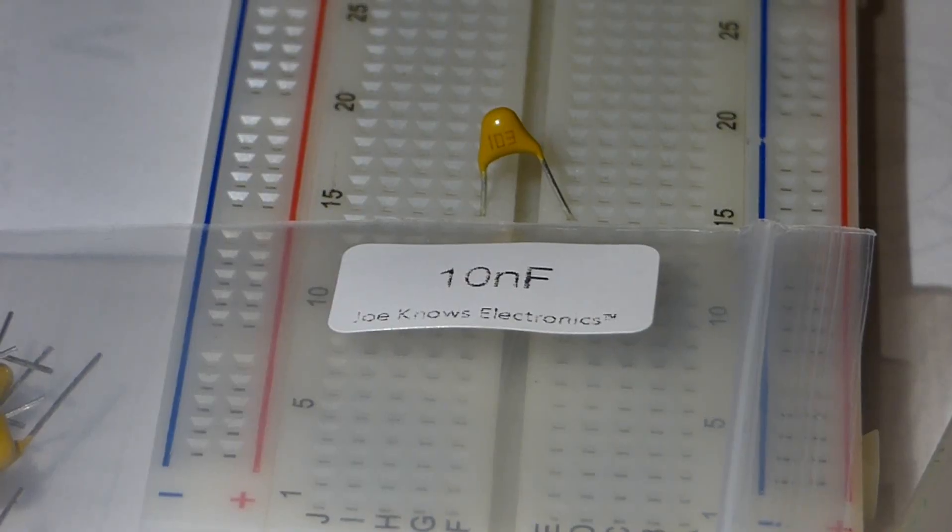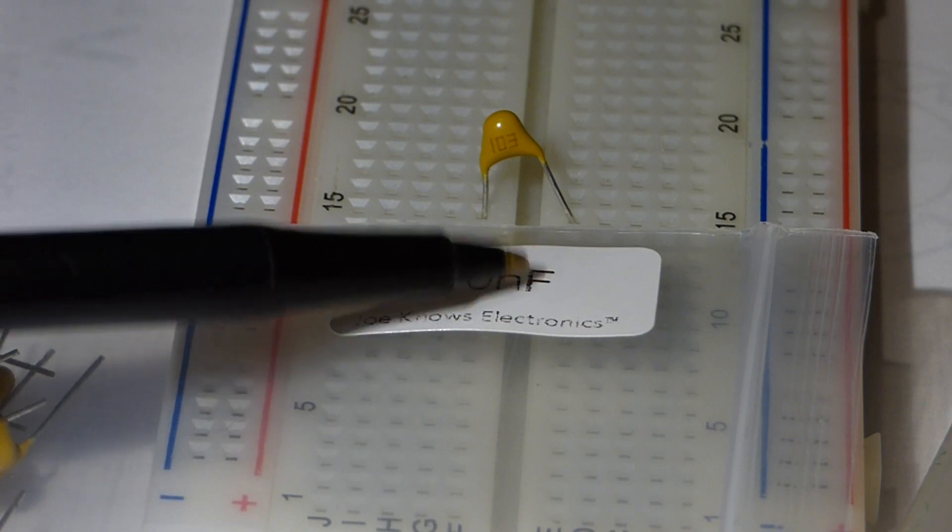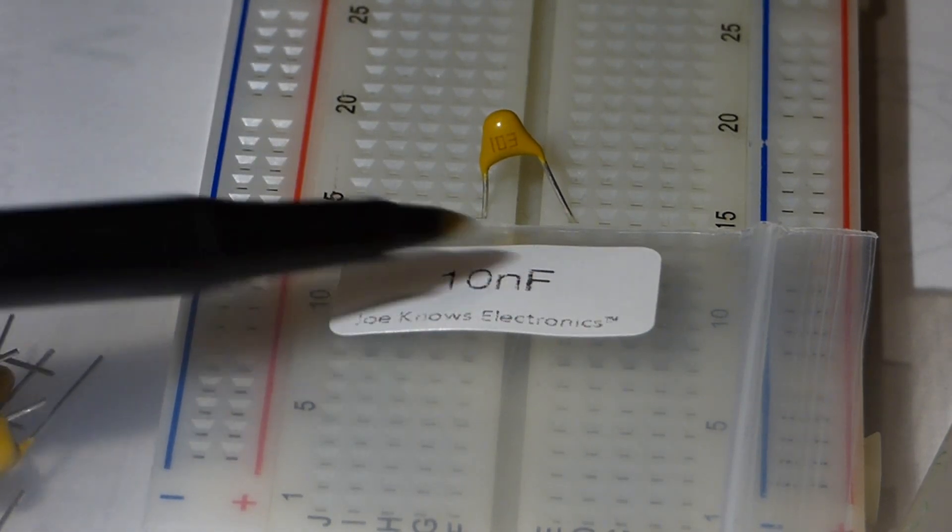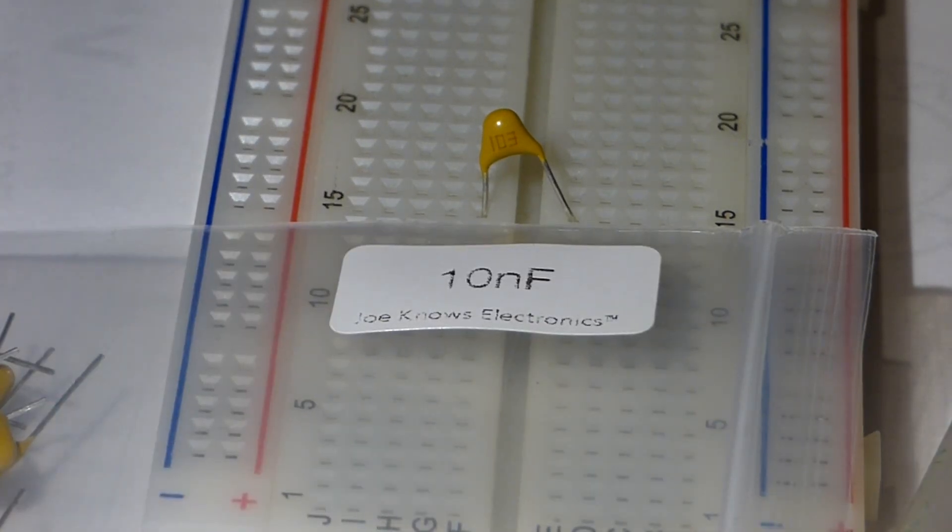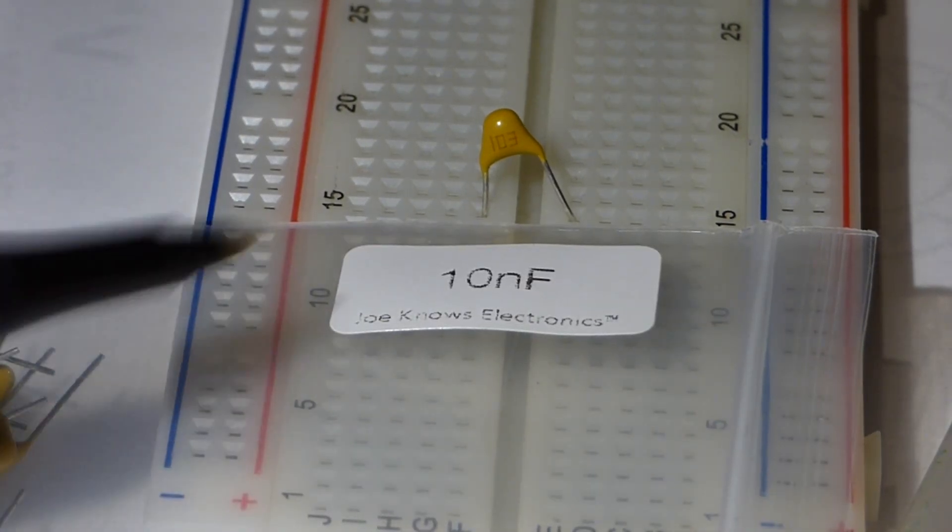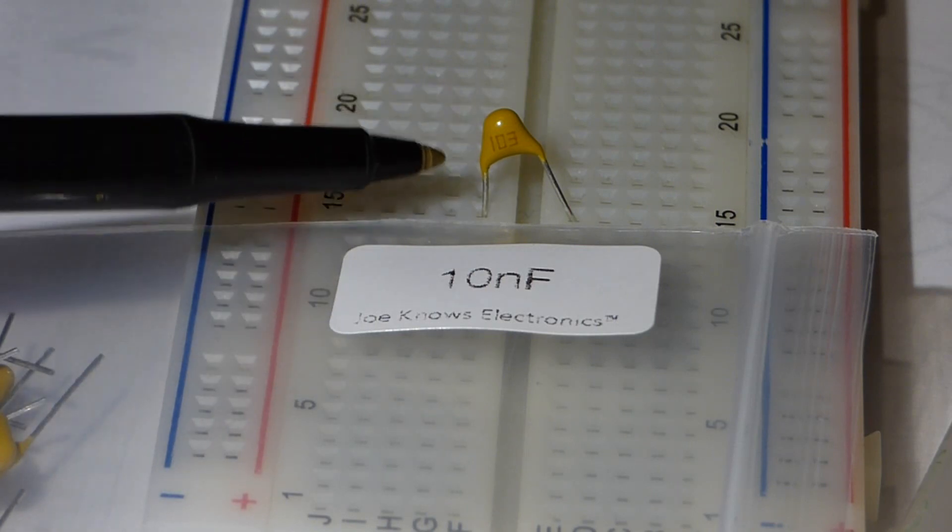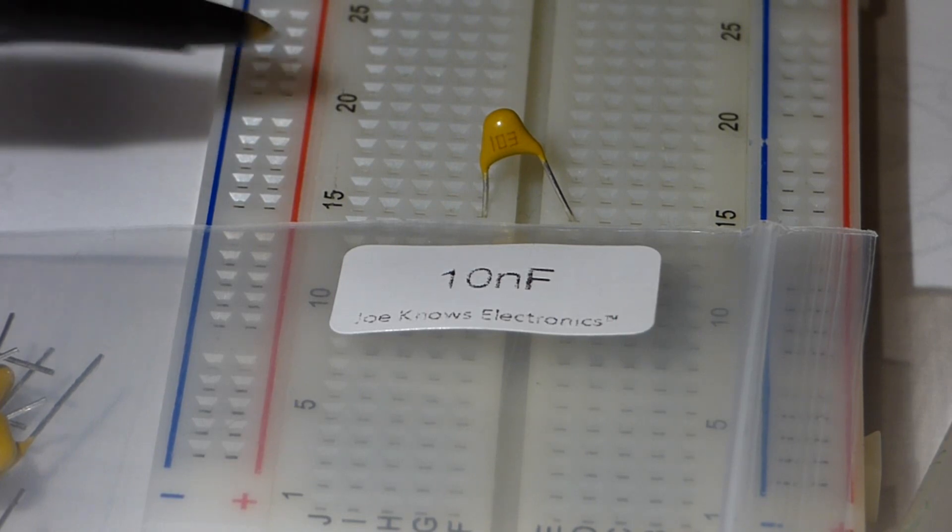Here we have a capacitor on the other extreme. This is a 10 nanofarad capacitor. I actually have capacitors that are a lot smaller than this, but in the instruction manual for the multimeter, 10 nanofarad is the lowest reading that it gives me statistics on. The component—the capacitor—all it says on there is a one, zero, and three, so it's a lot harder to tell what the capacitance is by looking at the component.